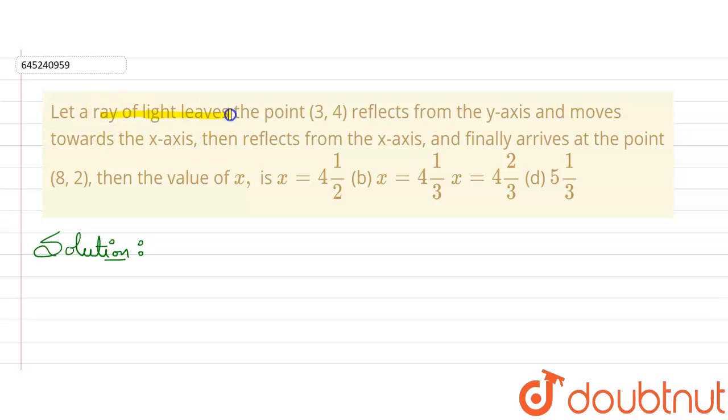Let a ray of light leave point (3,4), reflect from y-axis and then move towards x-axis, then reflect from x-axis again and finally arrive at a point whose coordinates are (8,2). Then find the value of x here. Four options are given.